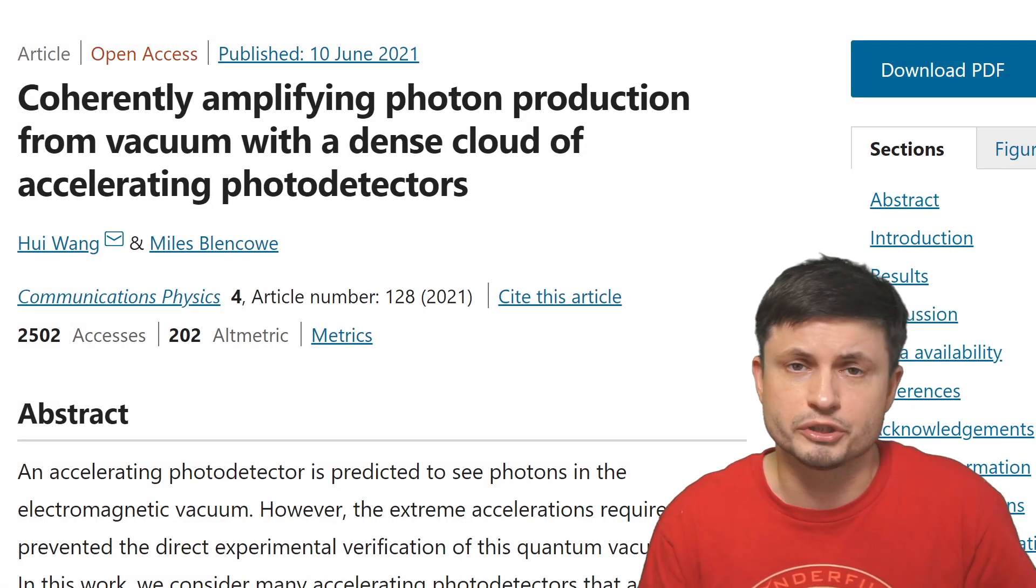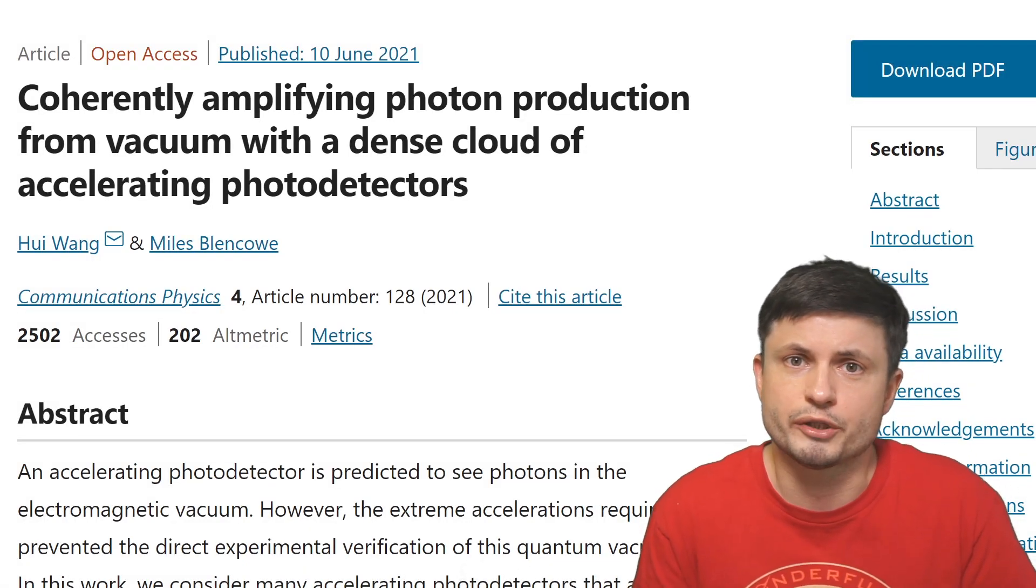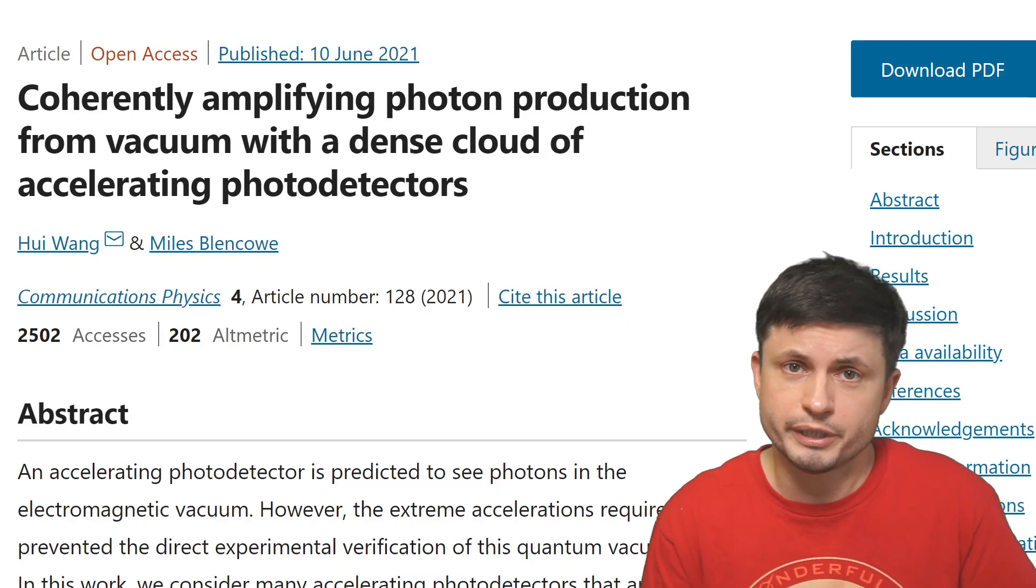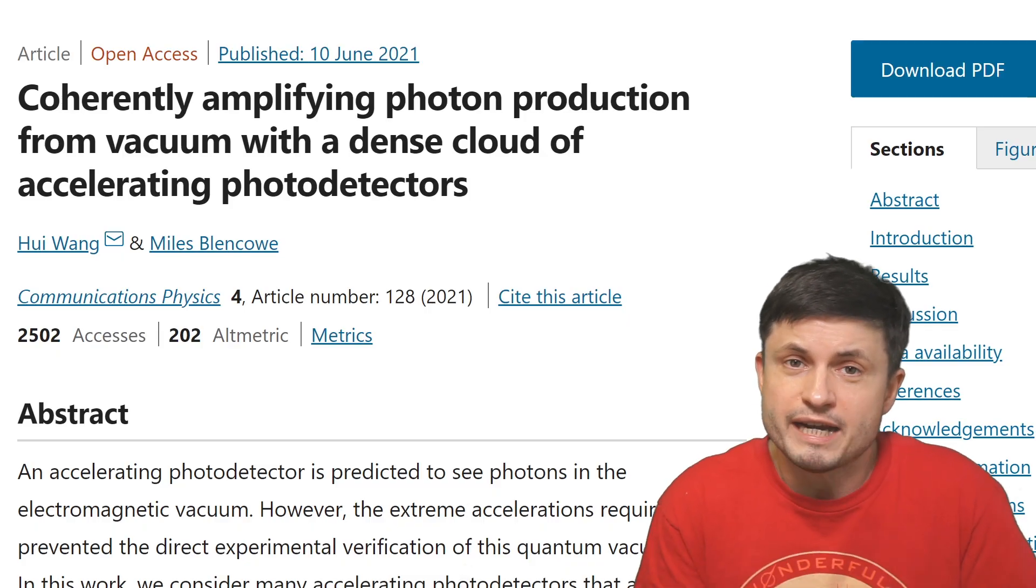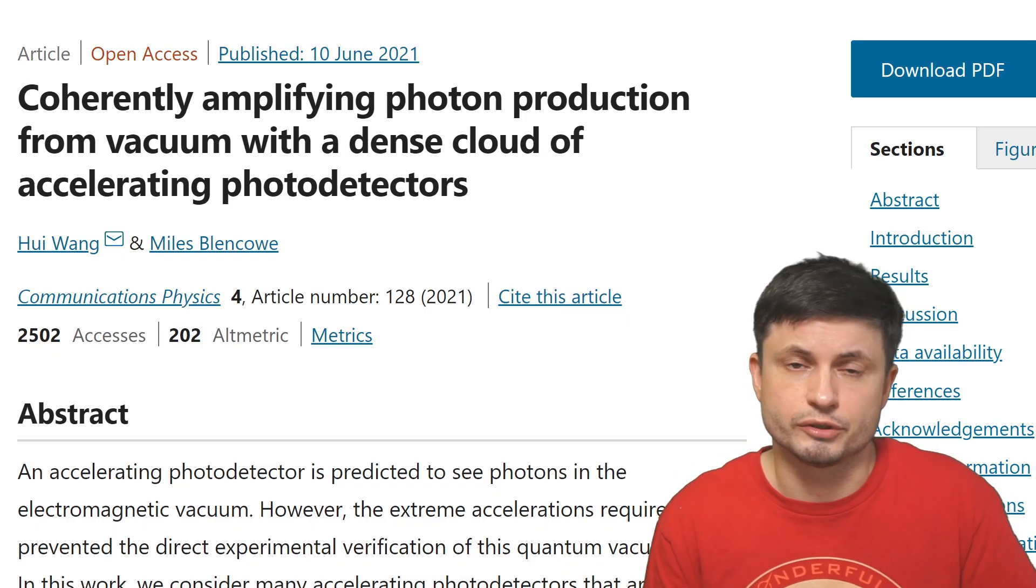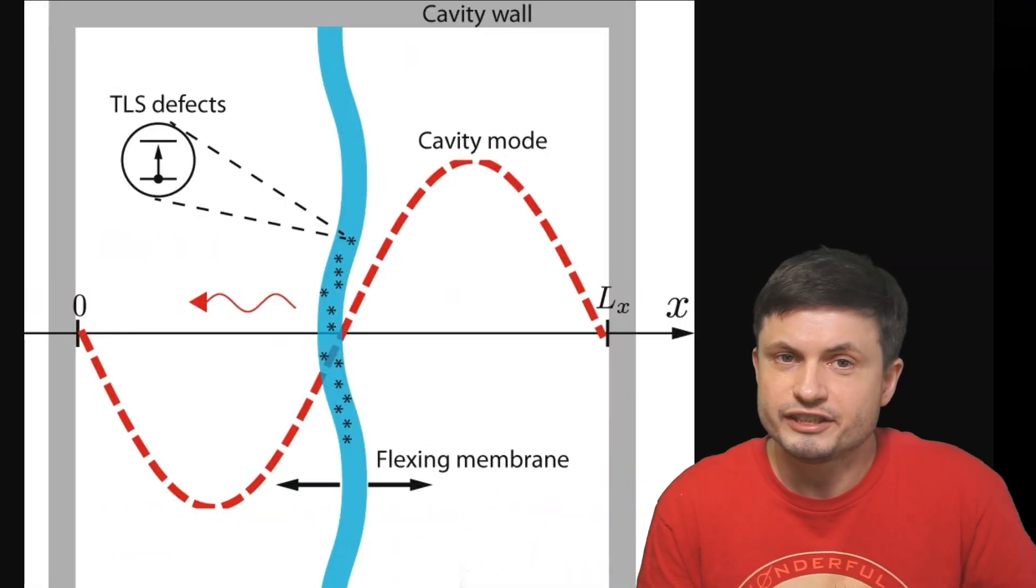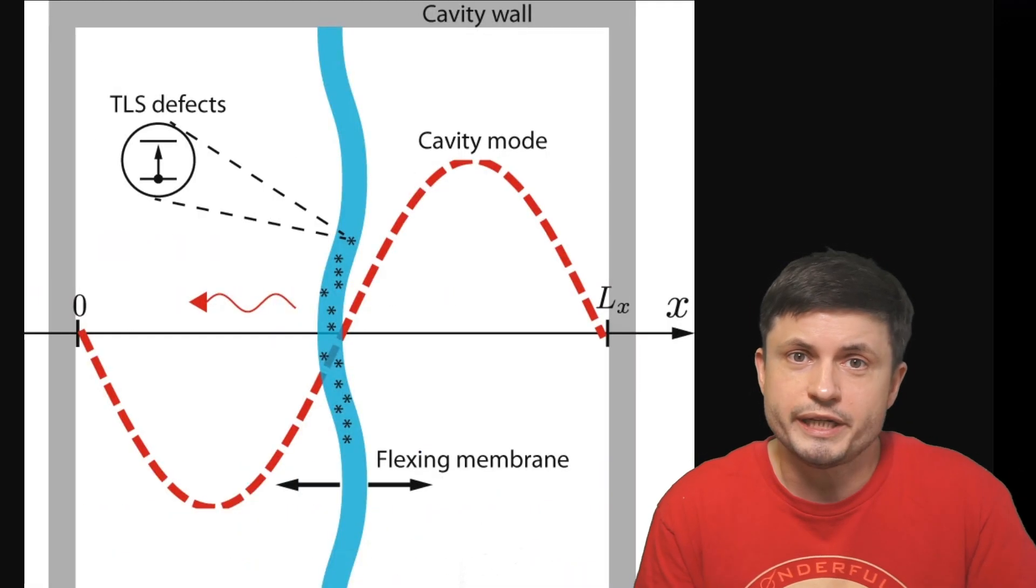But this new paper that was published not so long ago seems to argue otherwise. They might have devised an experiment that should be possible to create here on planet Earth, and it might be able to help us prove the existence or non-existence of Unruh radiation. And although it hasn't been conducted yet, it's already in the works and might be conducted in the next few years.